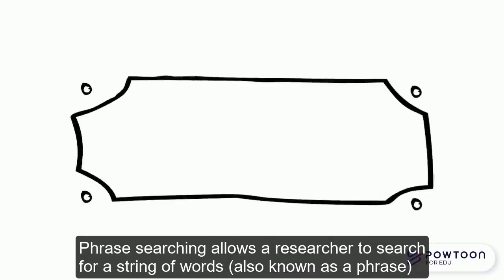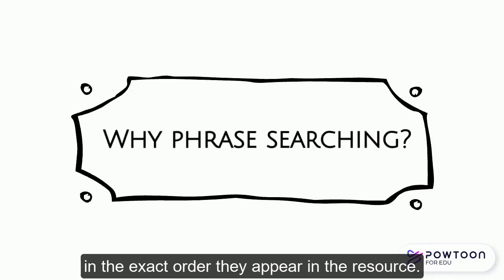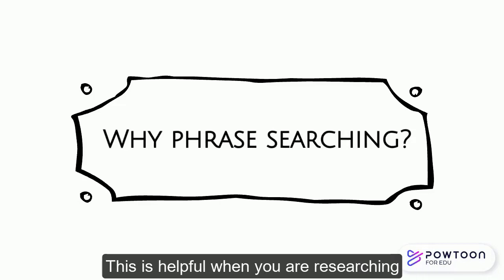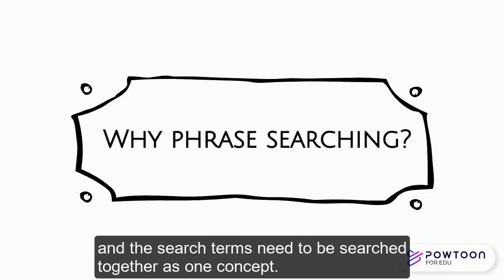Phrase searching allows a researcher to search for a string of words, also known as a phrase, in the exact order they appear in the resource. This is helpful when you are researching ideas or specific subjects that require more than one term and the search terms need to be searched together as one concept.